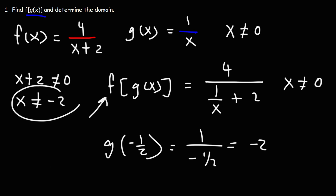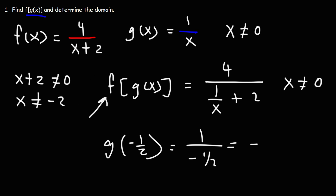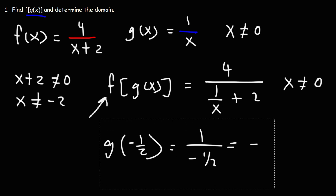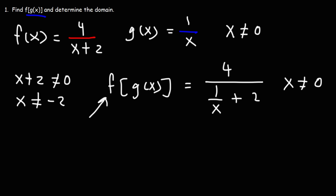If you plug negative 2 into f, you get a 0 on the bottom. Therefore, x cannot be equal to negative 1 half.